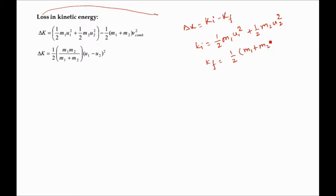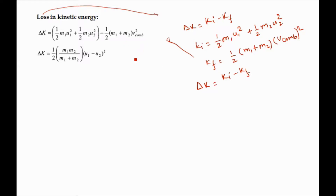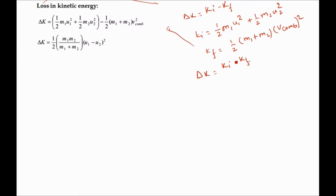The final kinetic energy is (1/2)·(m1 + m2)·v_com², since the two bodies move together as a single entity with total mass m1 + m2. From the derivation, the loss in kinetic energy equals (1/2) · m1·m2 / (m1 + m2) · (u1 − u2)².